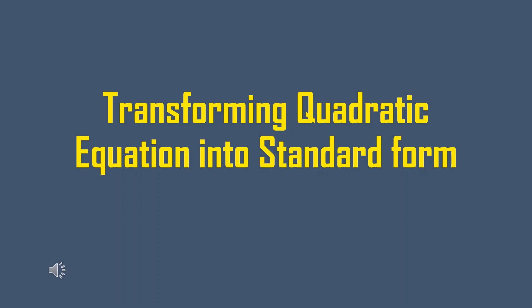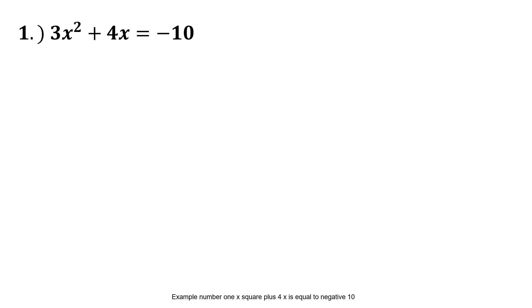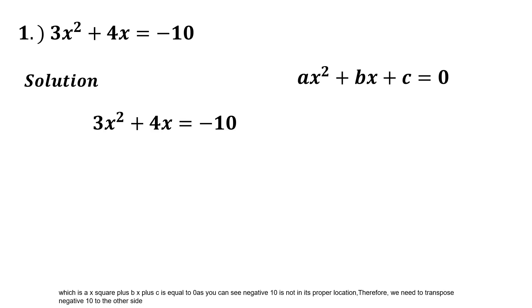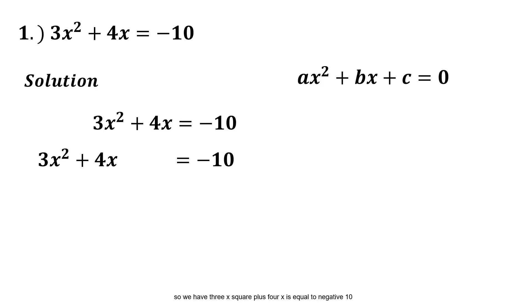Example number one: 3x² + 4x = -10. Since our target is to transform the equation into standard form, which is ax² + bx + c = 0, as you can see negative 10 is not in its proper location. Therefore we need to transpose negative 10 to the other side.